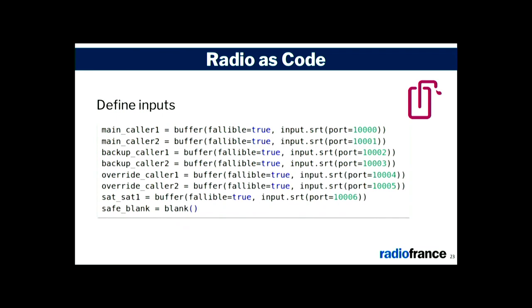Let's zoom in on what LiquidSoap does internally. We define inputs — the five inputs we talked about: main from the two SRT callers (main caller one, main caller two), the backup, and the satellite. All of these sources can fail. We also create a safe blank source that serves as a last resort — if everything else has failed, we switch to blank, because it's better to broadcast silence than nothing.